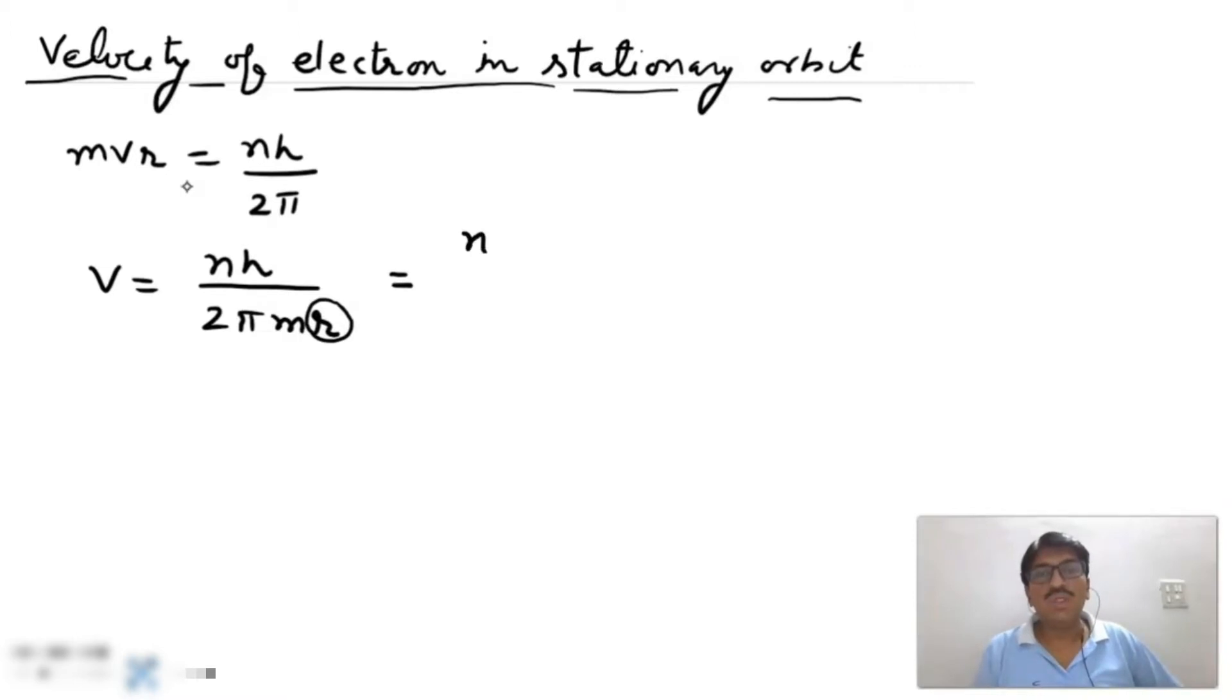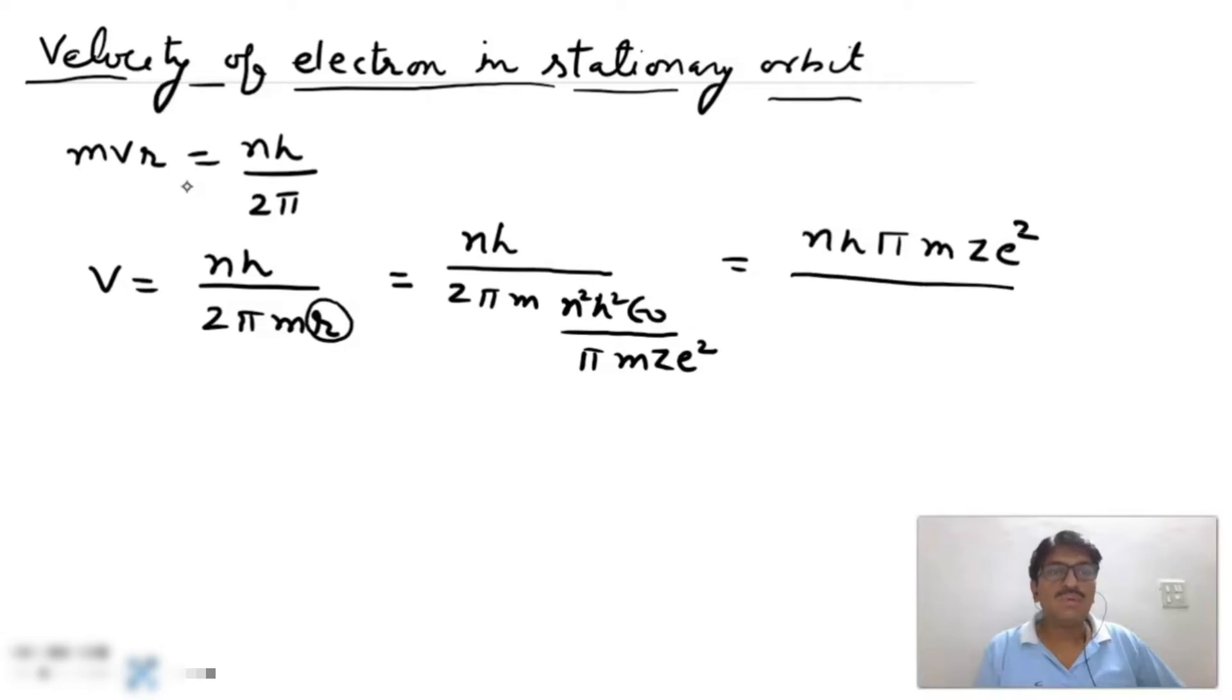Now we have to put the value of R in this equation. nh upon 2π m and value of R is n² h² ε₀ upon π m ze². Or we can write nh upon 2π m times π mze² upon n²h²ε₀. Pi cancel out.